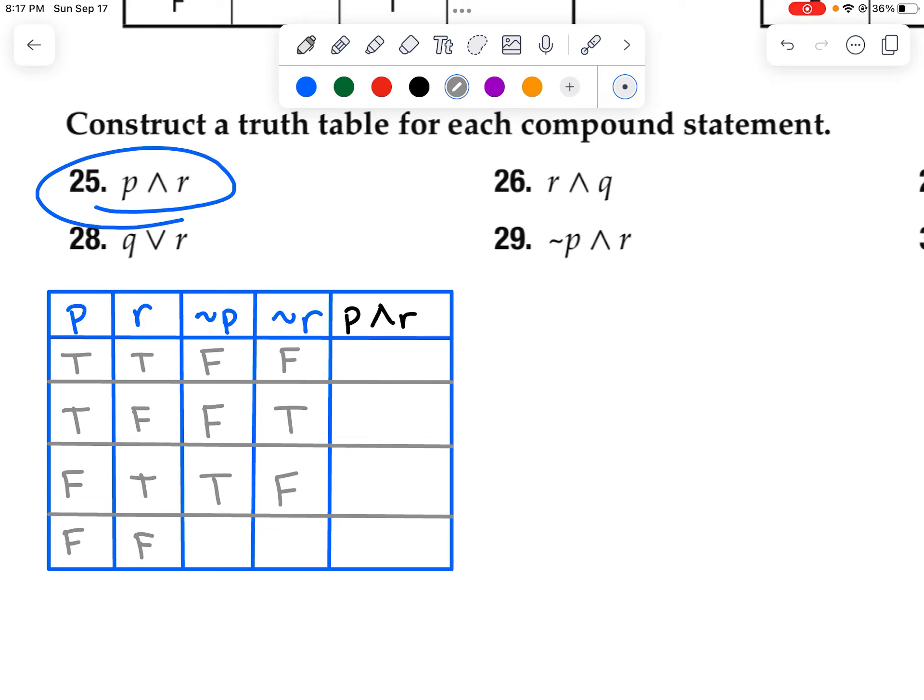And one more time. If P is false, the opposite is true. And if R is false, the opposite of R is true.